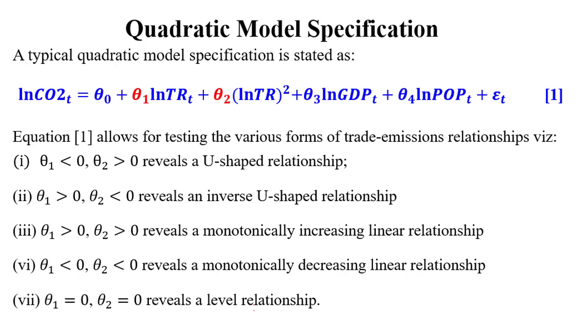On the screen is a typical quadratic model specification where in this case I have carbon emissions as a dependent variable and trade openness as a variable of interest that we want to investigate its increasing impact on emissions. GDP and POP in this example will be used as control variables. Equation one allows us to test various forms of the trade emission nexus. We can deduce five different scenarios from equation one, and our main coefficients of interest are coded in red: theta 1 and theta 2.